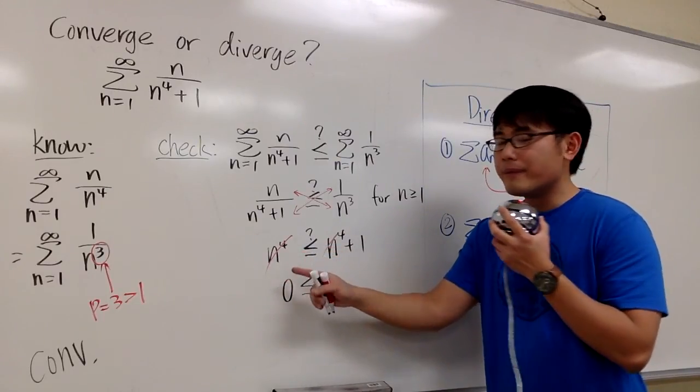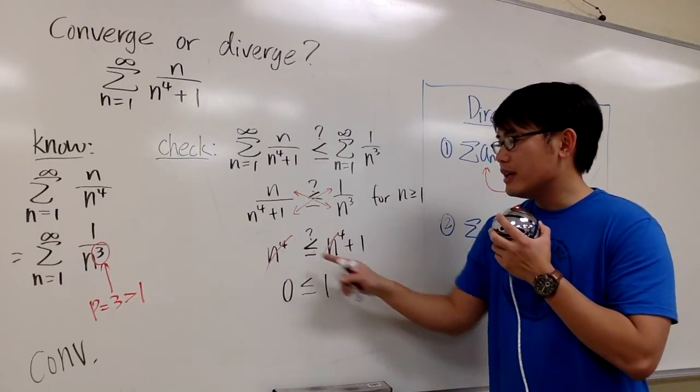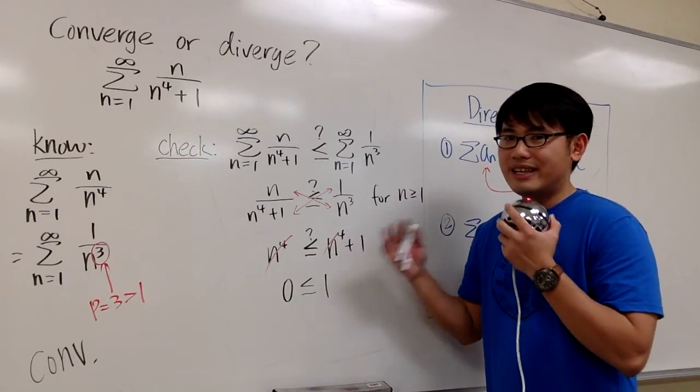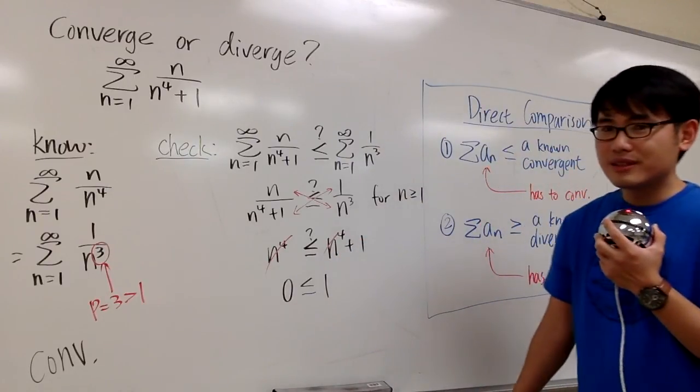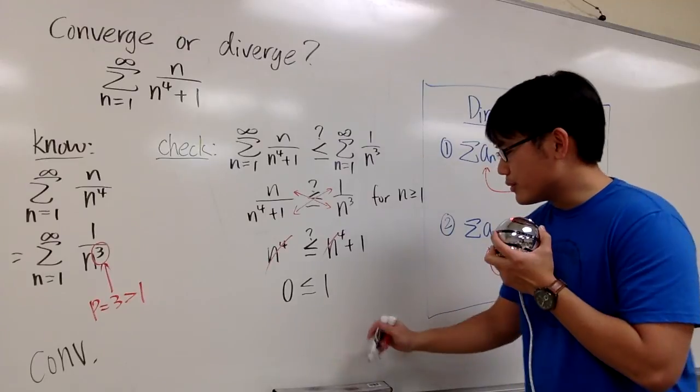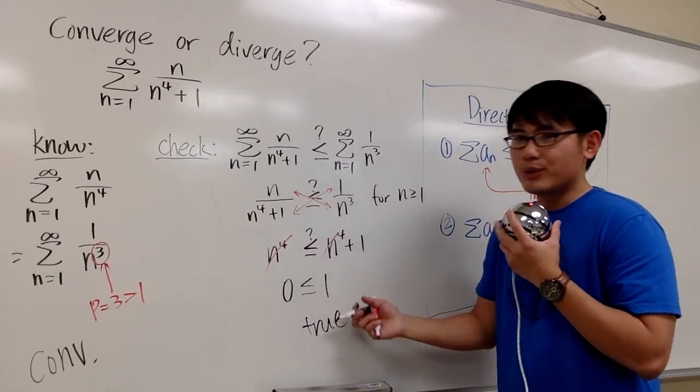Sometimes you have to be careful if you have n to the fifth here and n to the fourth here, then you have to really be careful with that situation. But this is clearly true. We know, of course, 0 is less than or equal to 1.